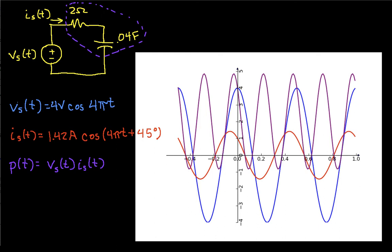So we know that at any point in time, power is voltage times current, which is what we have here. So if we want to see the power as a time waveform, we take the voltage waveform and multiply it by the current waveform. And I've plotted all three waveforms here.